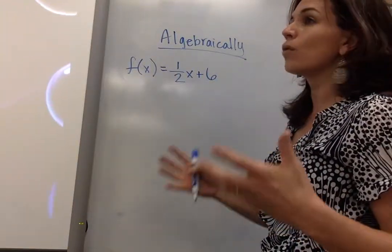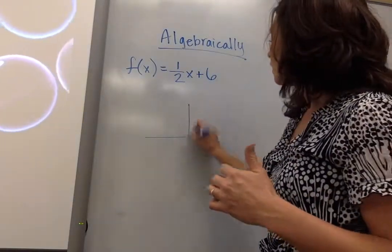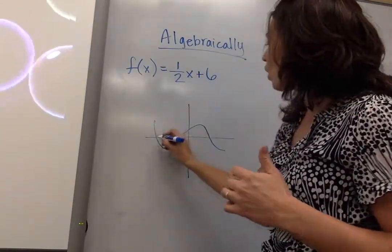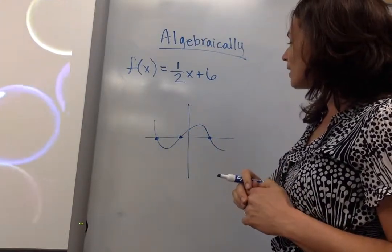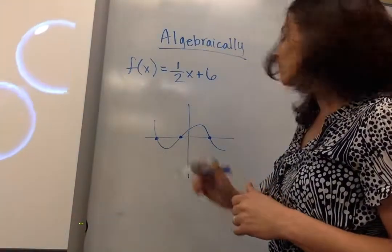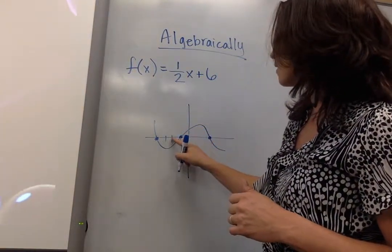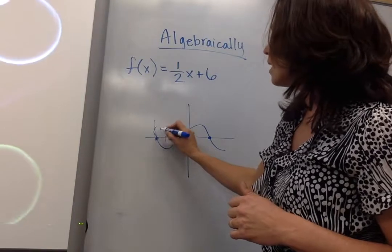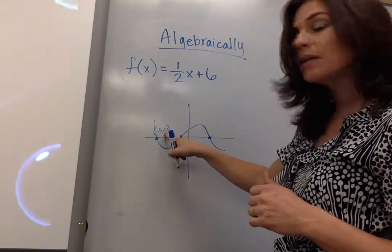We know that the root is where it crosses the x-intercept, and notice on the graph, if I have a graph, all these points right here, what is my value for y? I know that my value of x is negative 1, negative 2, negative 3, but it's negative 3, and my y value is 0.